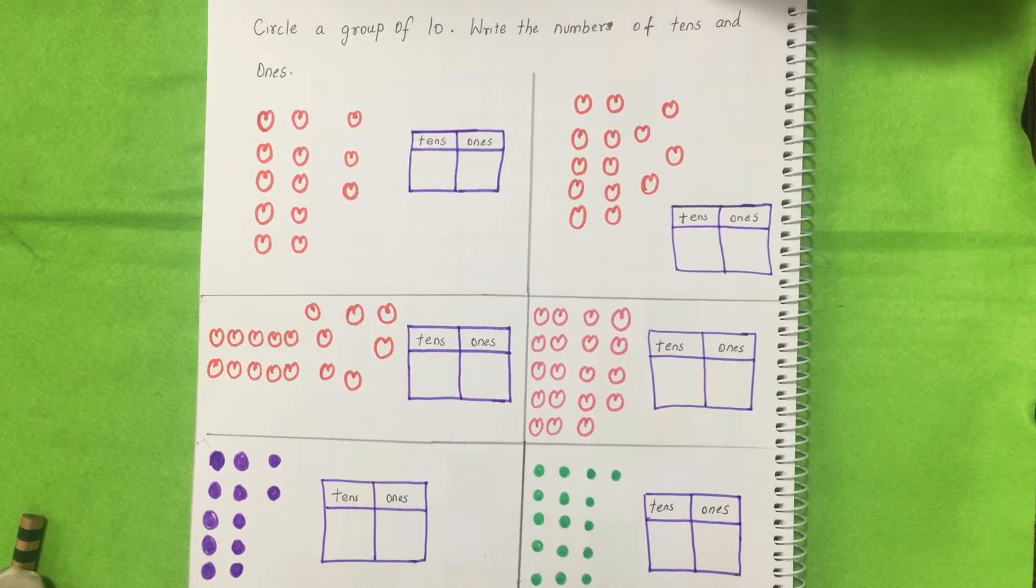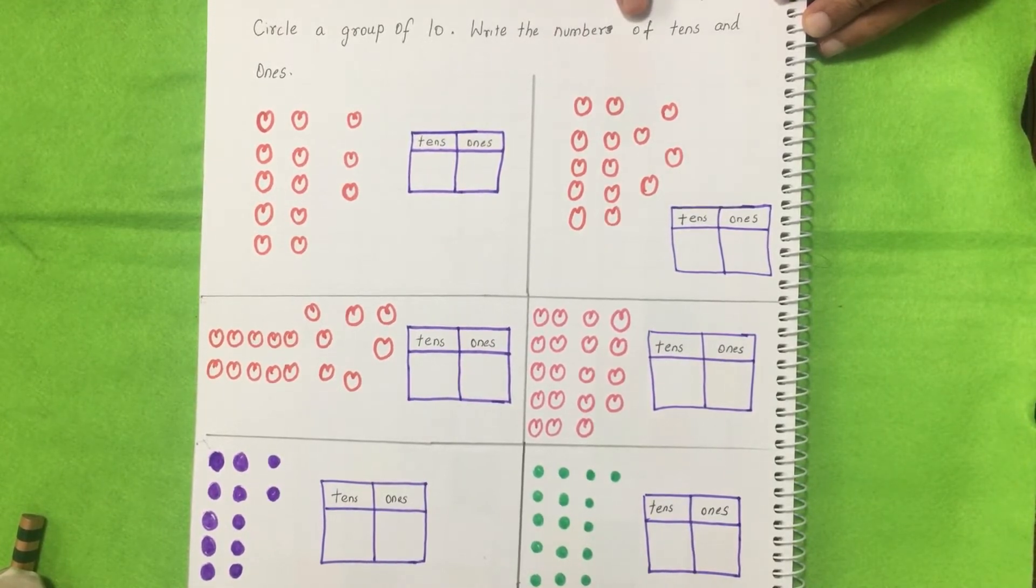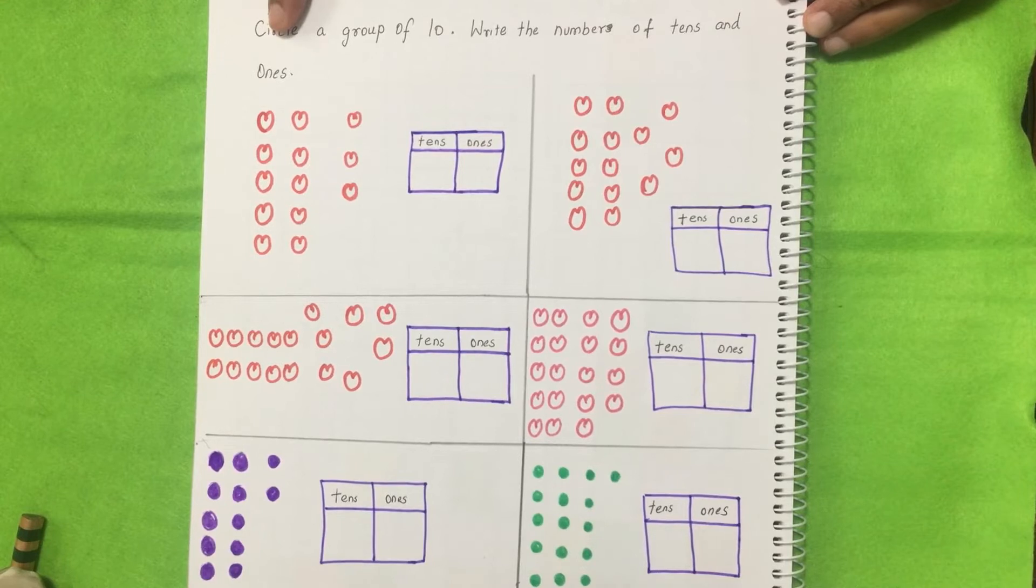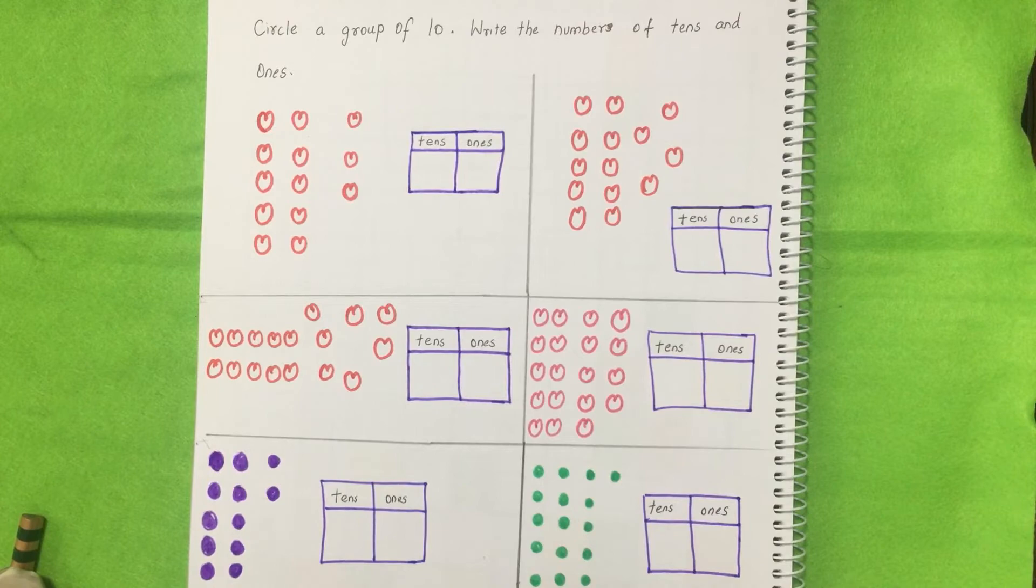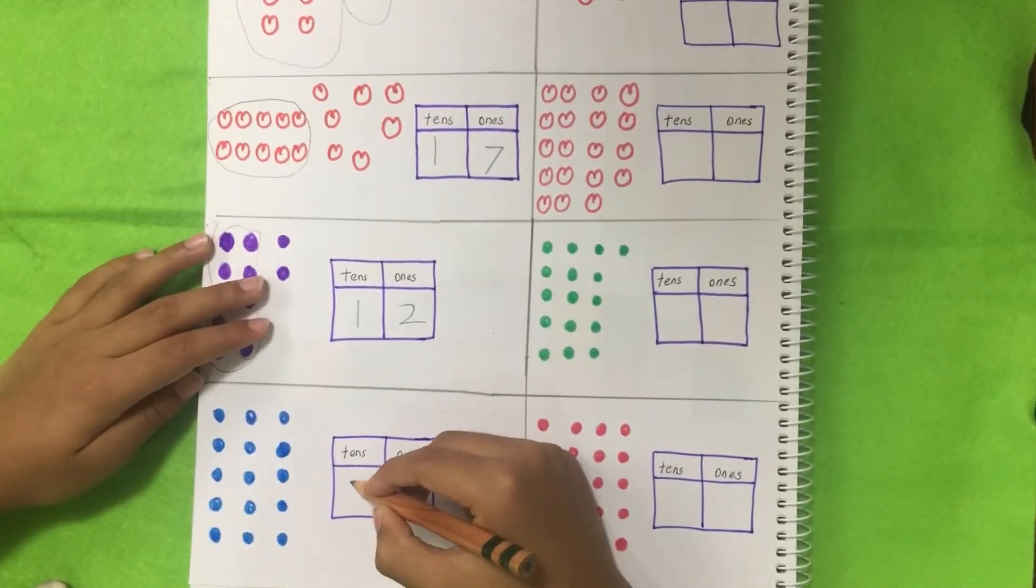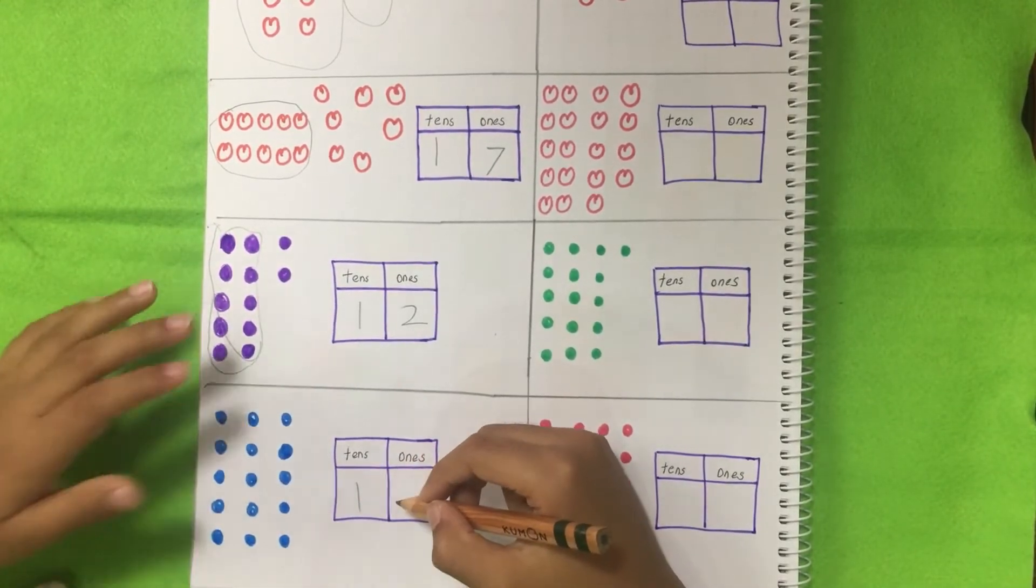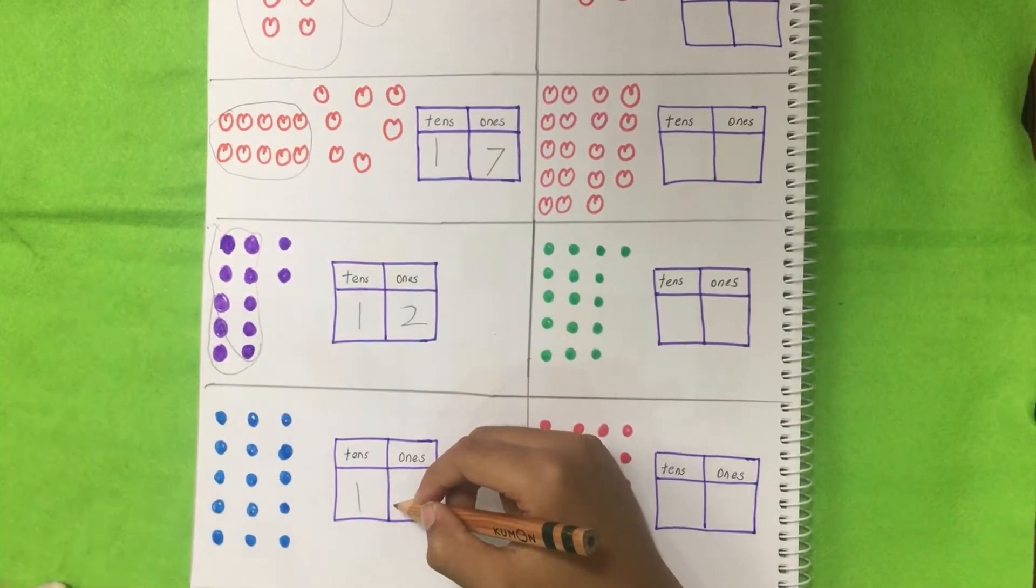This is the activity to work on the place values. Here what he needs to do is circle a group of ten, write the number of tens and ones, and say the number. This is mainly to work on the tens and the place value revise. I will make a video later on how we started place values in the Montessori way. Ten and five units.